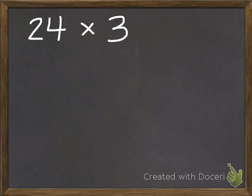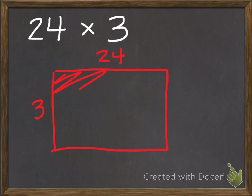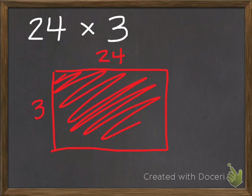So let's start with 24 times 3. If you look at a rectangle, we know that it can represent a multiplication problem. If the length was 24 and the width was 3, we would know that all of this area would be the product of 24 times 3.